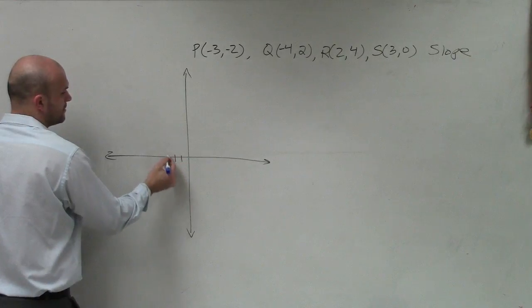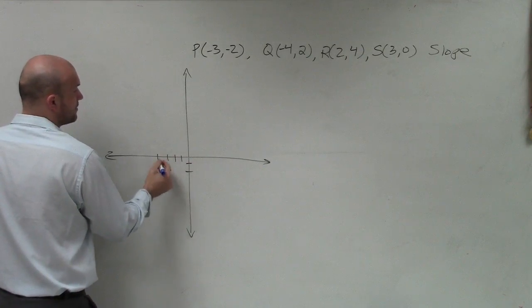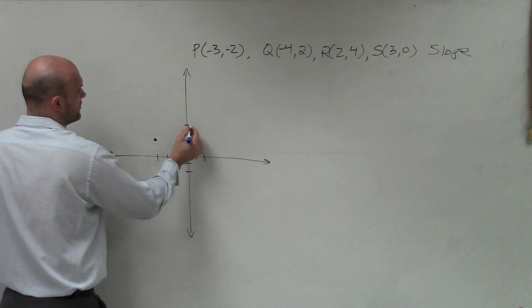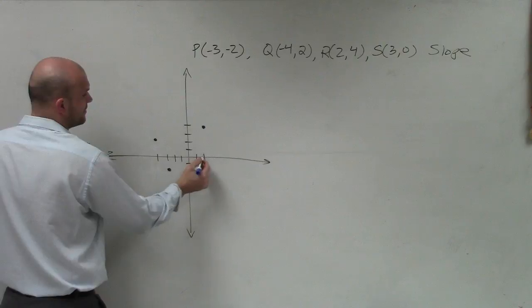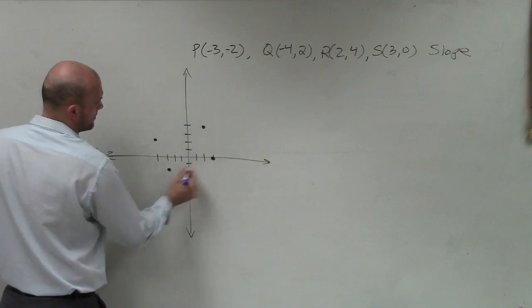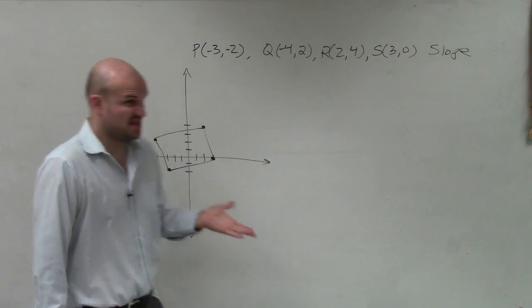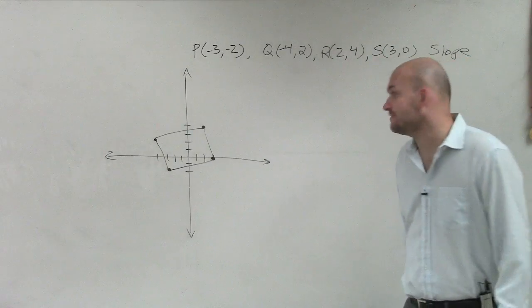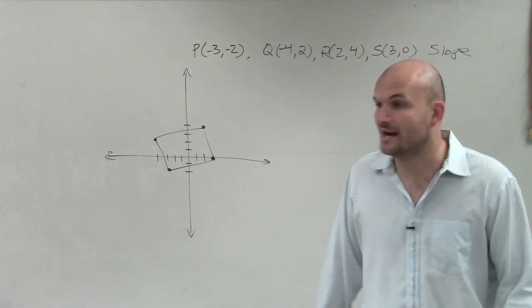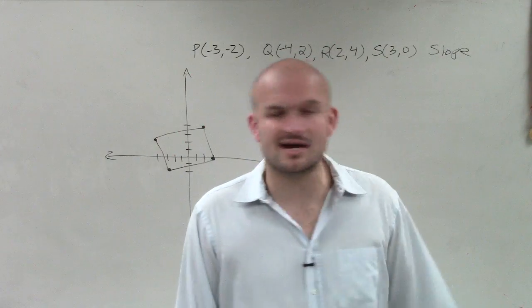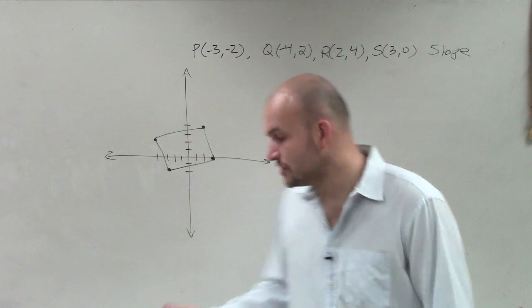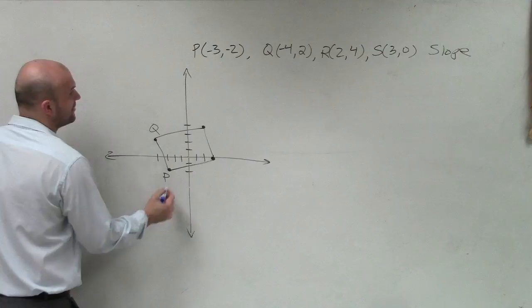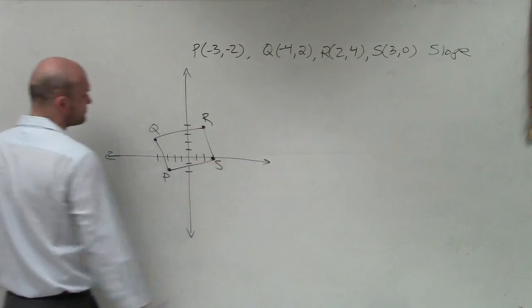So we have negative 3, negative 2. We have negative 4, 2. We have 2, 4 - 1, 2, 3, 4. And we have 3, 0 - 1, 2, 3, 0. Sorry about that, I broke down my cardinal rule. You guys got to make sure you label them. Label your points - P, Q, R, S.